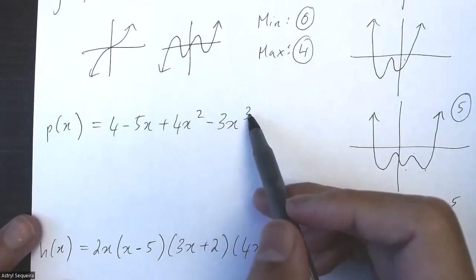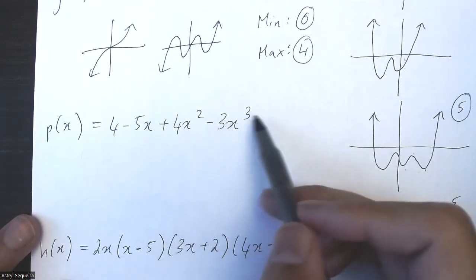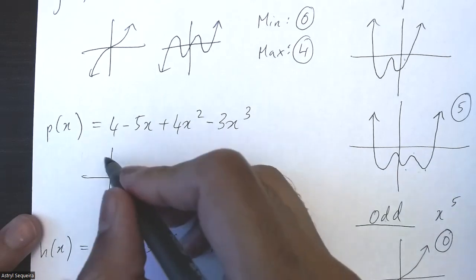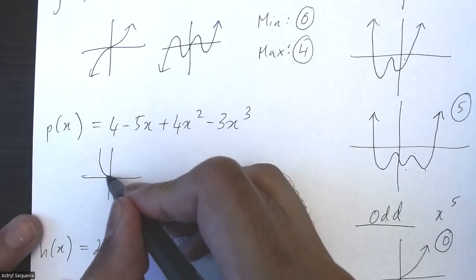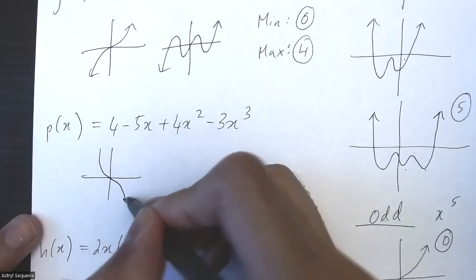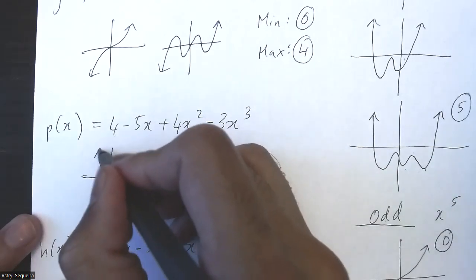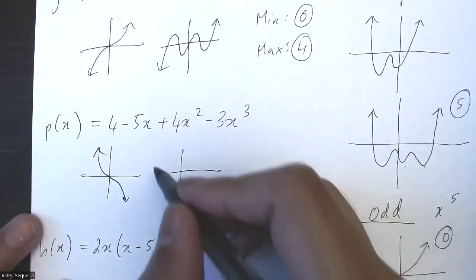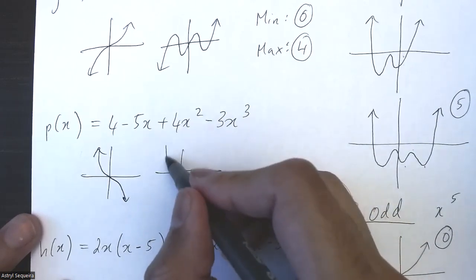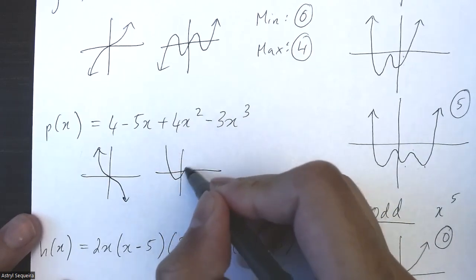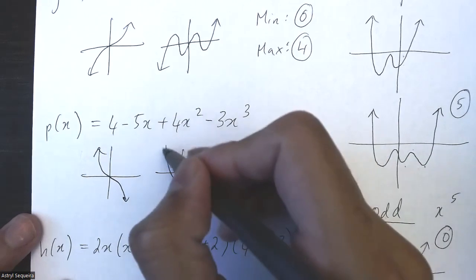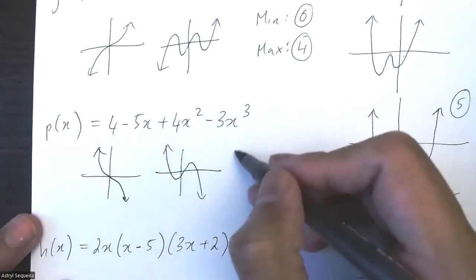Here we have a negative cubic function. The minimum number of turning points for an odd function — it doesn't matter if it's positive or negative — will be zero. The maximum number of turning points will be one less than the degree, which is two.